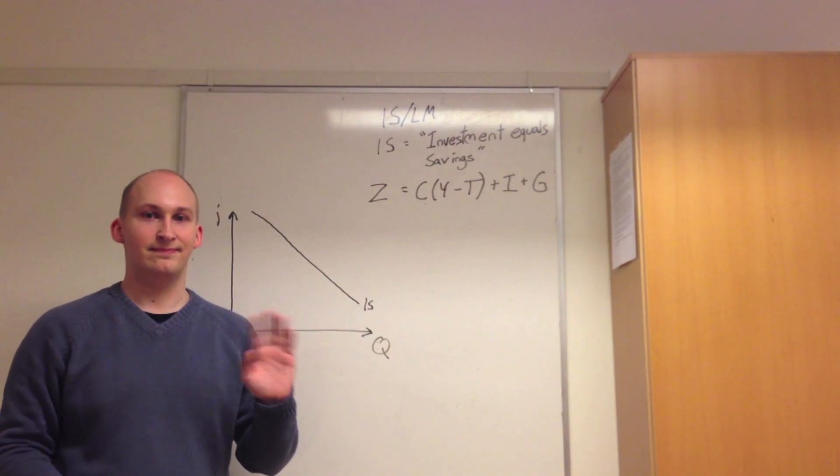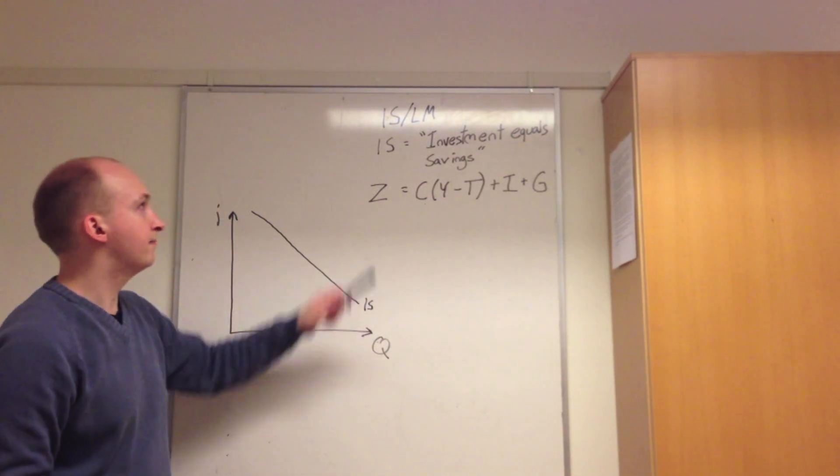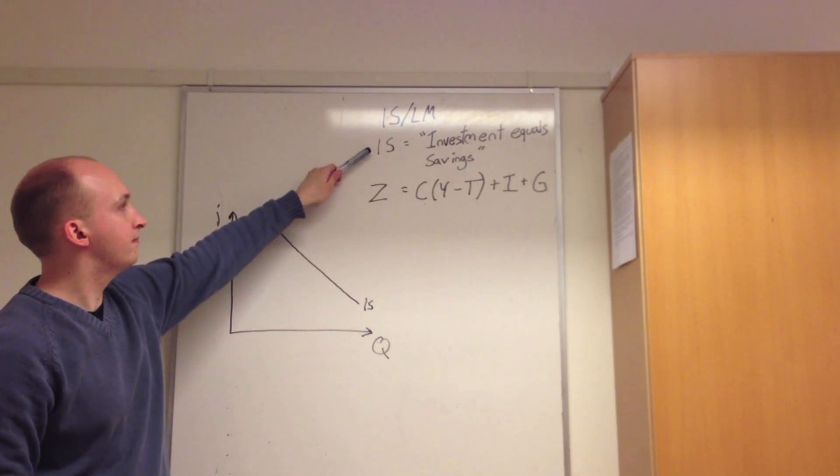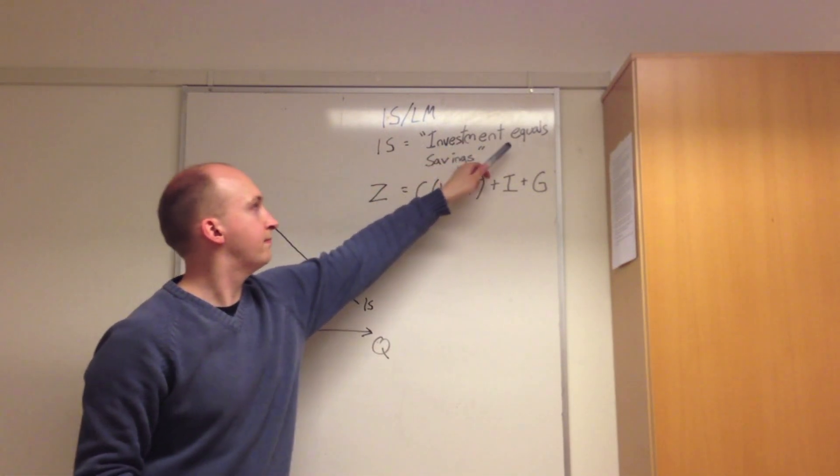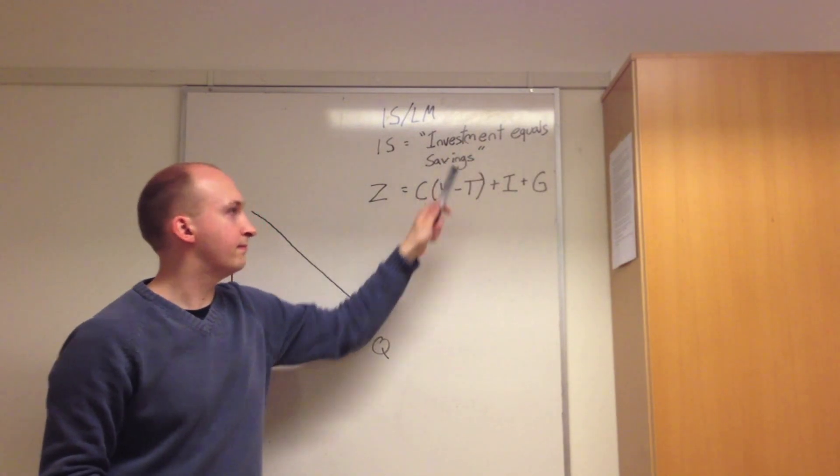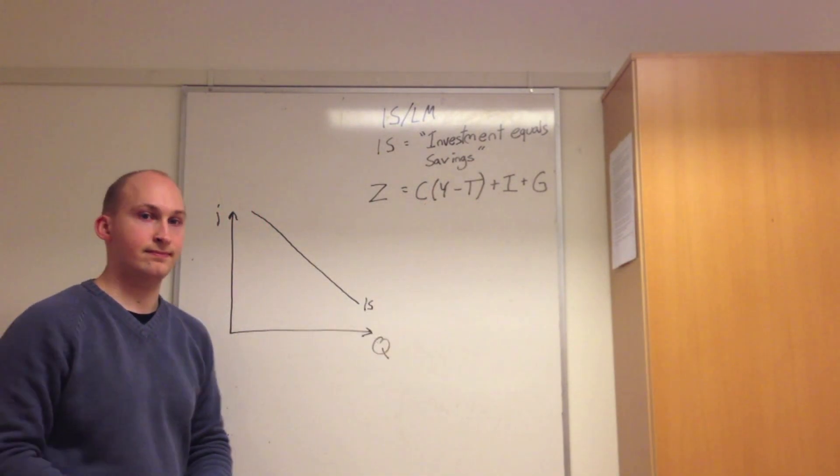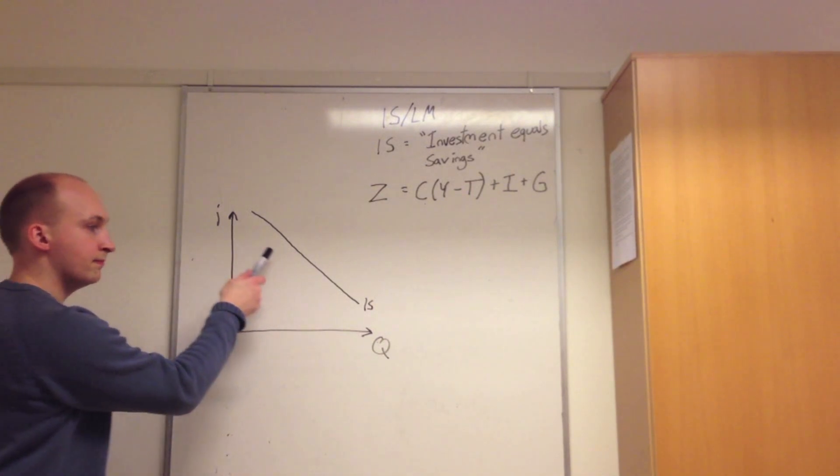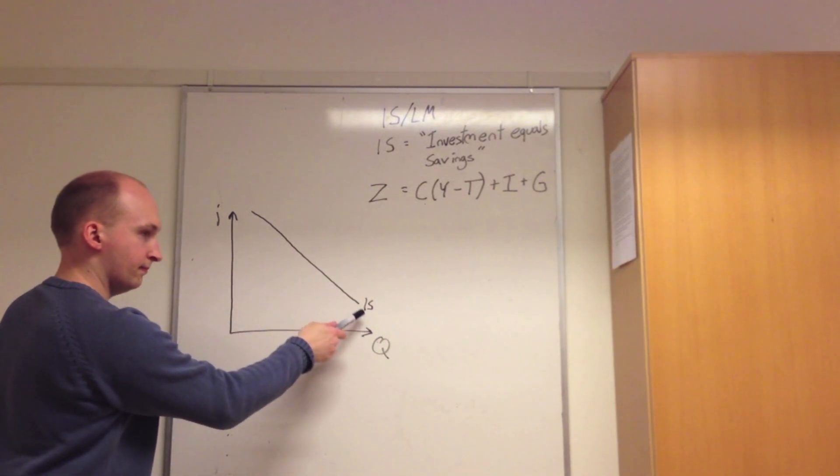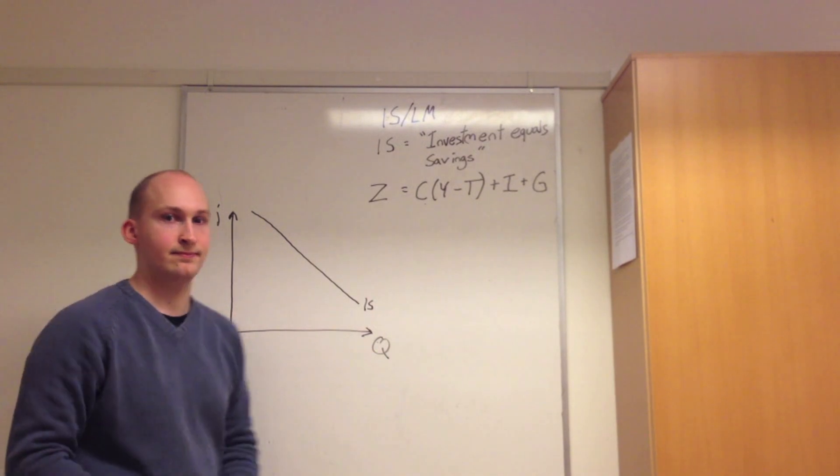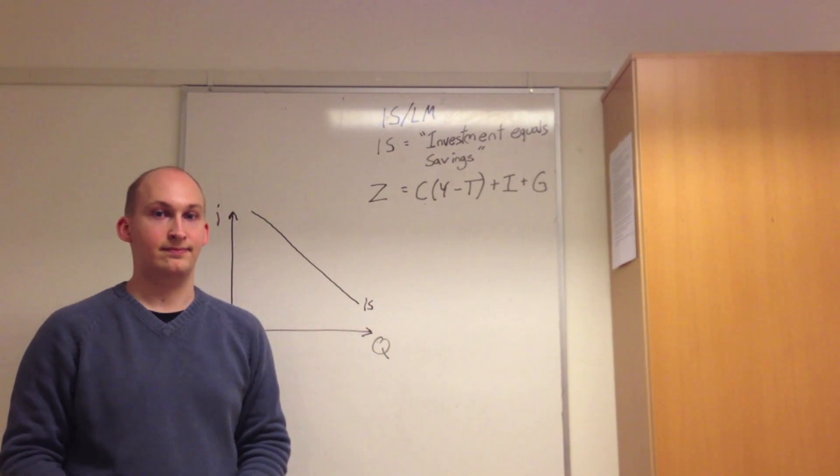We start off this tutorial by discussing the IS curve, where IS equals investment equals savings, or essentially the equilibrium in the goods market. This is denoted by a downward sloping IS curve, where the higher the interest rate I, the lower the quantity demanded Q. Given that we have I on the Y axis and Q on the X axis, we have that the higher the interest rate, the lower the quantity consumed. Hence why we have a downward sloping IS curve.